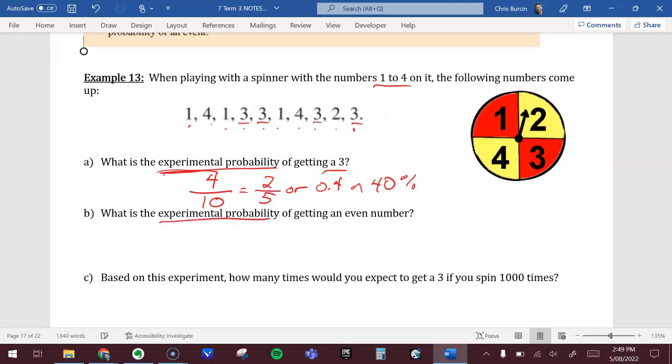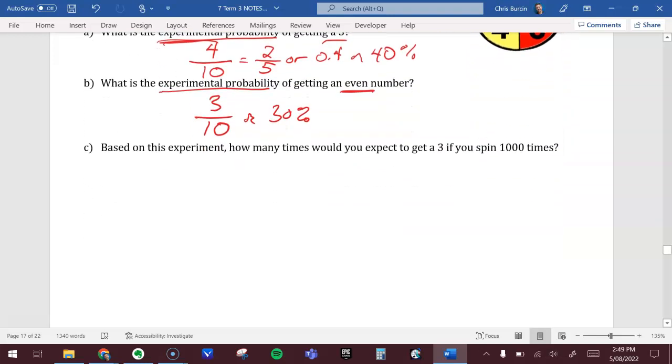Same deal. What is the experimental probability of getting an even number? Let's see how many even numbers we have out of our ten. We have one four, two fours, and one two. So three times out of those ten experimental spins, we got an even number. That can be expressed as three over ten, or a thirty percent chance.